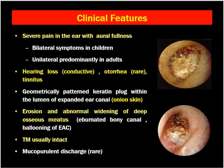Now let's discuss the clinical features of keratosis obturans. Occasionally children, and sometimes middle-aged and elderly patients, present with severe pain in the ear with aural fullness of short-term duration. The symptoms are usually bilateral in children, whereas they are predominantly unilateral in the adult population. When the patient is diabetic, we need to differentiate it from malignant otitis externa.